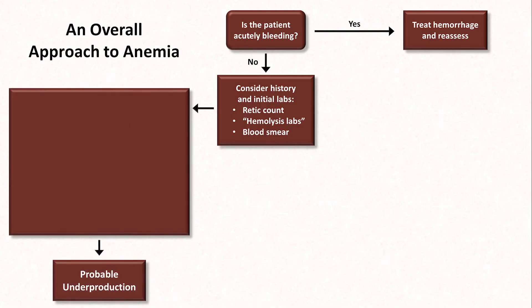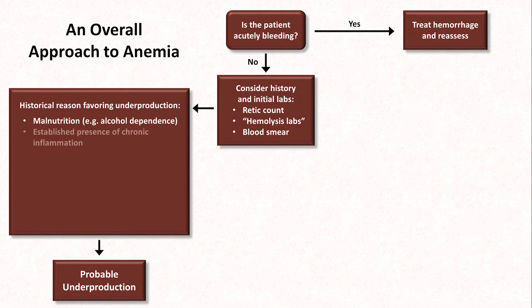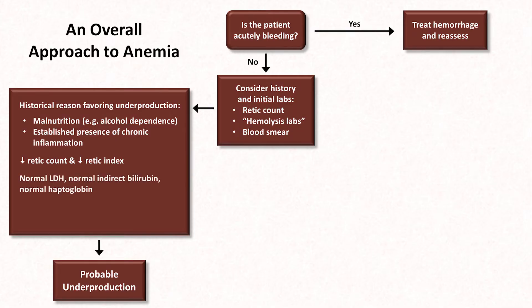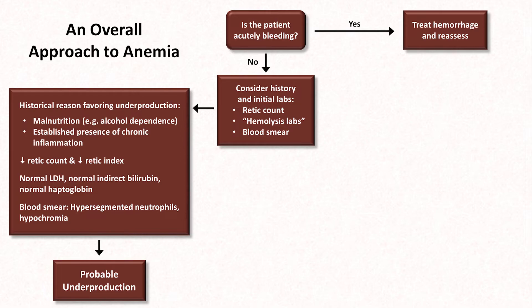Underproduction of red blood cells will be favored by a historical reason for it, including known malnutrition or the established presence of chronic inflammation, a lower RETIC count and/or RETIC index — keeping in mind the significant uncertainty regarding what the cutoff should be for an inappropriately low RETIC count or index — a normal LDH, indirect bilirubin, and haptoglobin, and a blood smear showing either hypersegmented neutrophils or hypochromia. No single patient with underproduction will have all of those findings, but a collection of multiple findings from that list is consistent with this category.